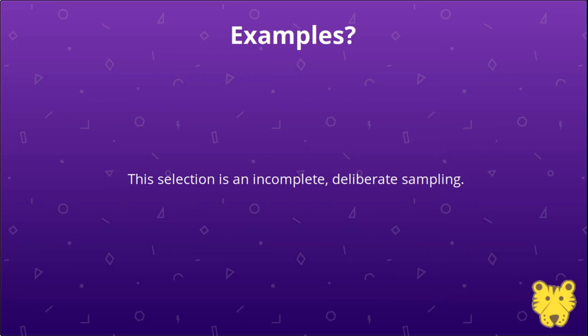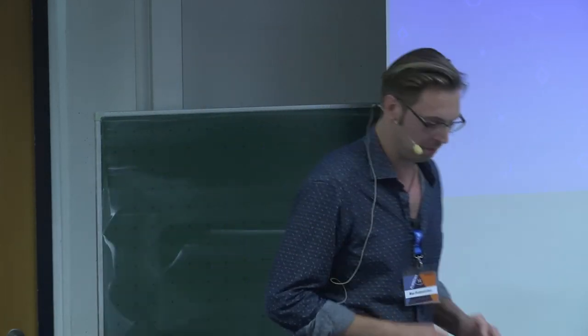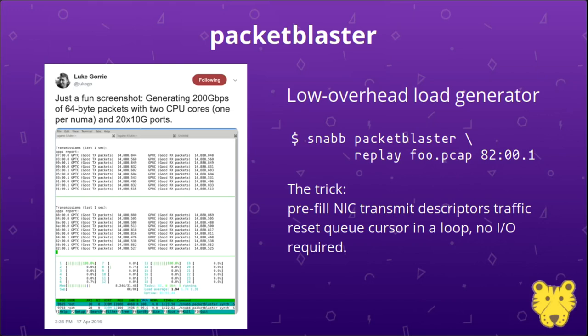What can you do with Snap? I'll show some deliberately sampled examples to give you an idea. Packet Blaster is a low-overhead load generator built using Snap. It's a really small program — somewhat like a proof of concept — that shows off what you can do when you can poke the network device directly. It uses a trick to send packets at full speed without actually doing any I/O with the device. Packet Blaster falls into the category of homemade diagnostics tools — if you need a custom network debugging tool, chances are you can write it with Snap pretty quickly.